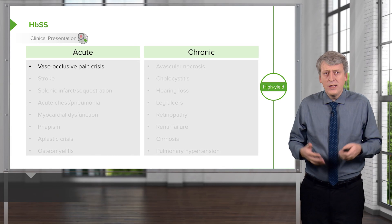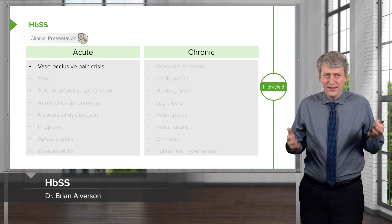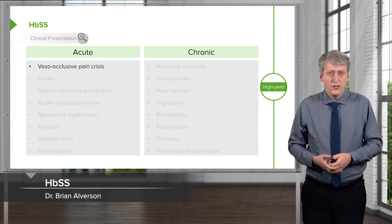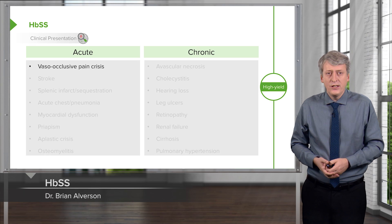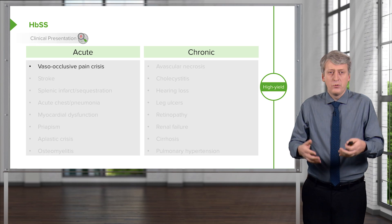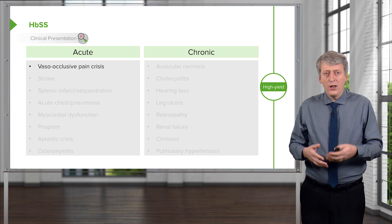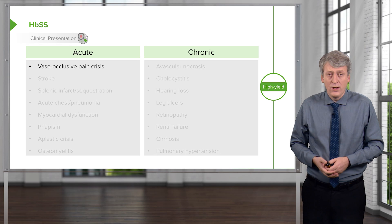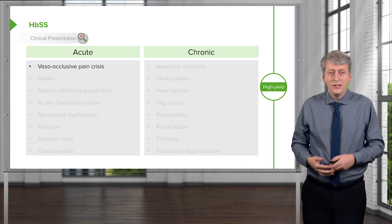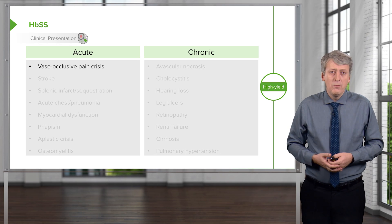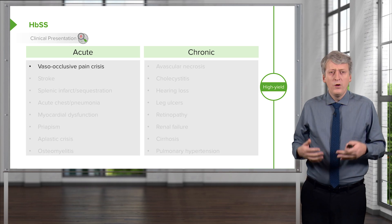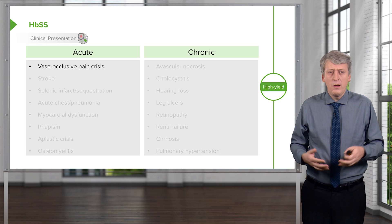How does hemoglobin SS disease — our classic presentation of sickle cell disease — how does it present? The most important thing that we should know about is the vaso-occlusive pain crisis. This is common. Patients with hemoglobin SS disease will present with extraordinary pain.